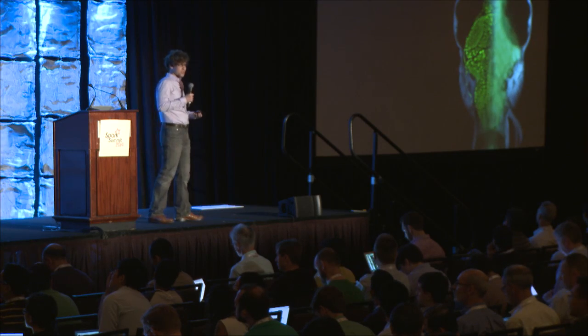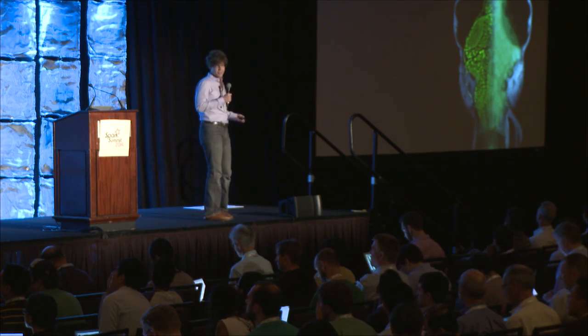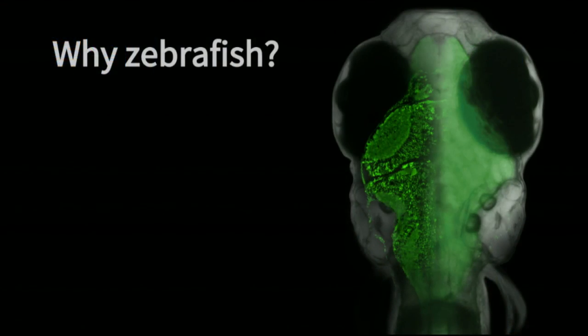So one of those advances is actually not a technology, but it's an organism. We do a lot of work with a very special animal, the larval zebrafish. I'm showing here a larval zebrafish. They're a little scary looking. The two big black spots are the eyes. And what's special about this animal is that it's almost entirely transparent.